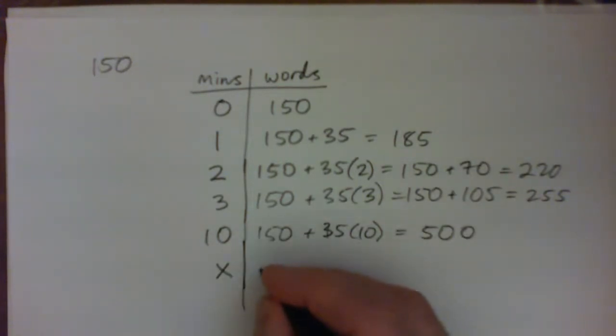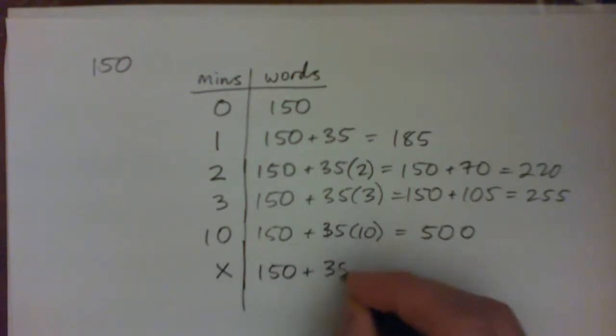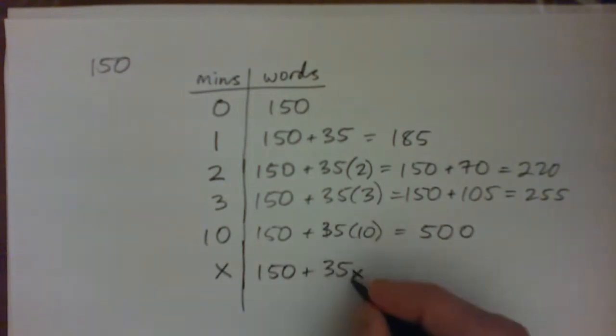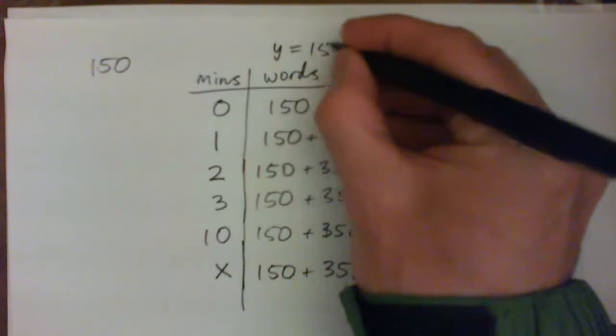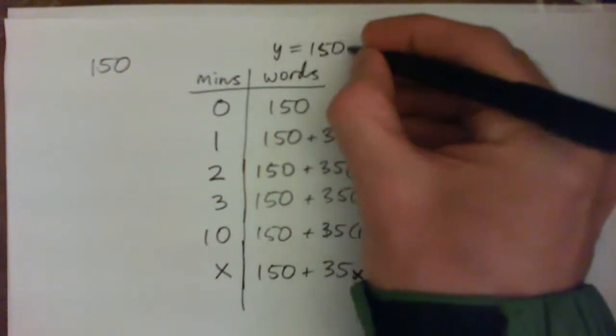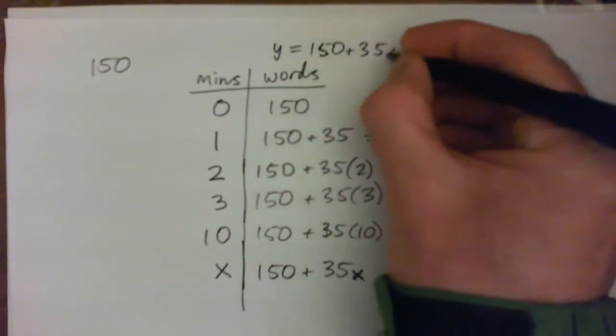And then, after X minutes, it's 150 words from yesterday plus 35 words per minute, 35 times X, yep. And so our formula could be written like this, Y equals 150 plus 35 times X.